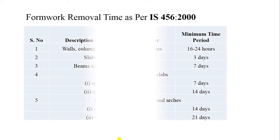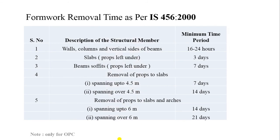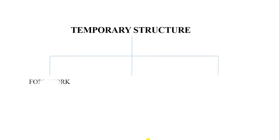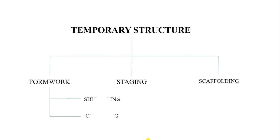Some important guidelines as per IS 456 — this is only for OPC cement, ordinary Portland cement. We can understand that formwork, staging, and scaffolding are three different temporary structures, and formwork has two parts: centering and shuttering.